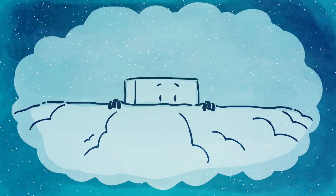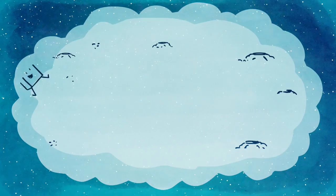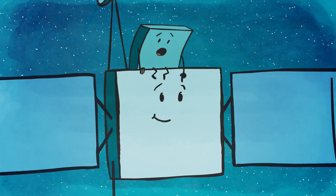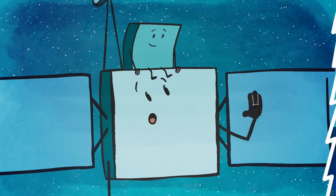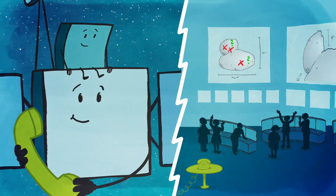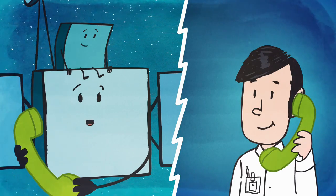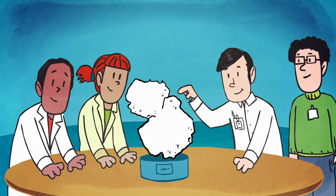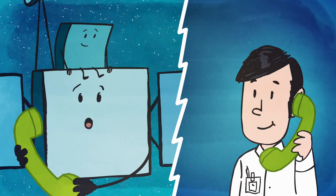No spacecraft had ever attempted to make a soft touchdown on a comet. Philae started to pick some of his favorite spots on the comet, but Rosetta had to check with the experts back home. They thought long and hard, and eventually found the best spot for Philae to land.